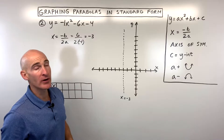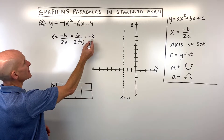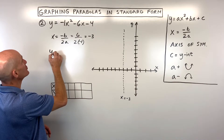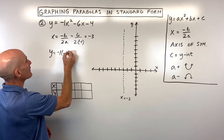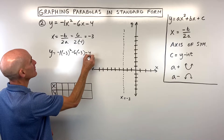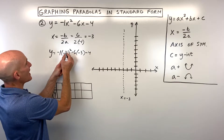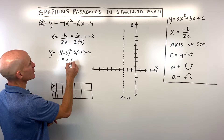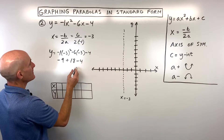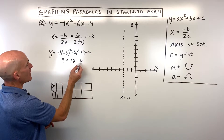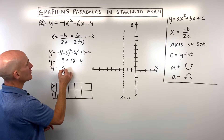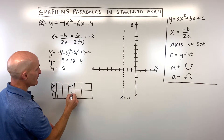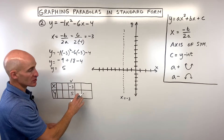To find the y-coordinate of the vertex, we plug negative 3 back in for x. Remembering to follow order of operations: negative 3 squared is 9, times negative 1 is negative 9. Negative 6 times negative 3 is positive 18. So negative 9 plus 18 minus 4 gives us 9 minus 4, which equals 5. Our vertex is at (negative 3, 5), which we put in the middle of our table.